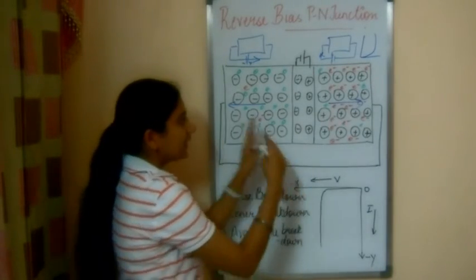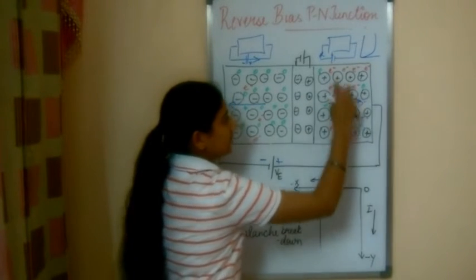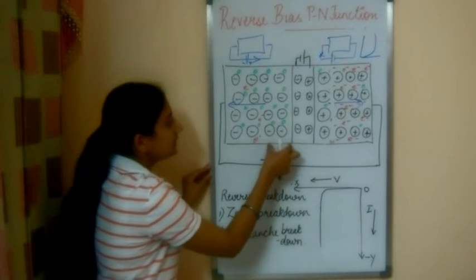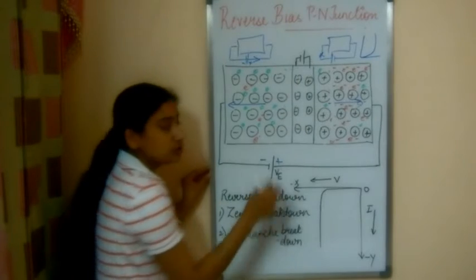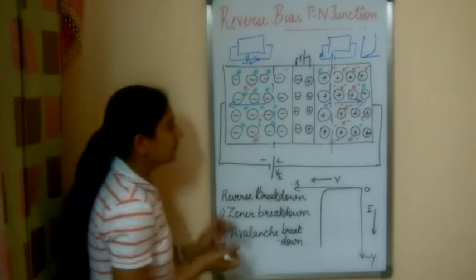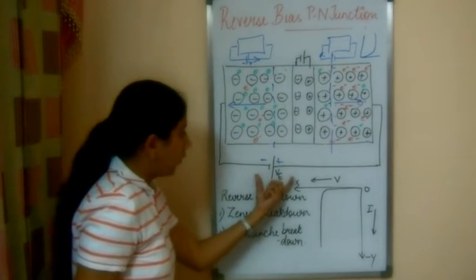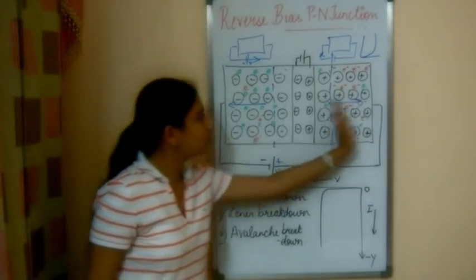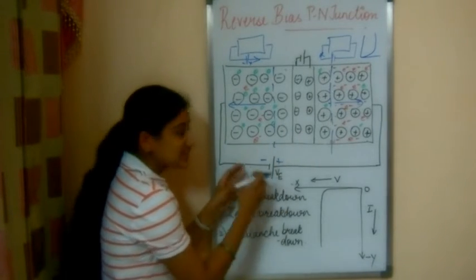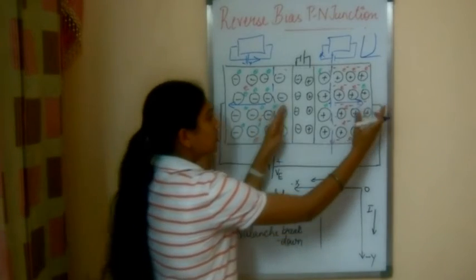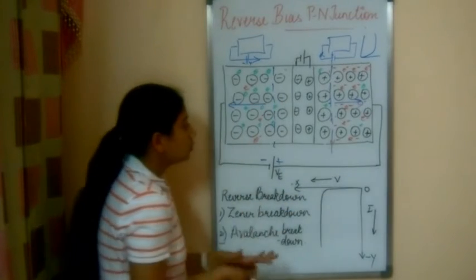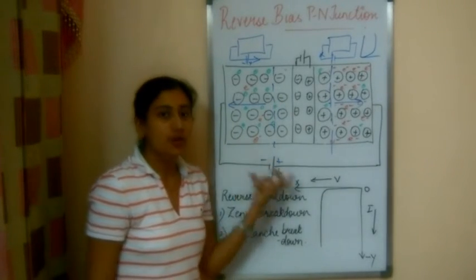Since electrons are moving away, their concentration near the junction decreases. Similarly, the concentration of holes near the junction decreases. This means the depletion layer is widening. So in reverse biasing, the current is not flowing — holes and electrons are moving away from the junction. If the voltage is increased further, all the electrons and holes will try to move out, meaning the junction is going to break. So in reverse biasing, we should theoretically get no current.